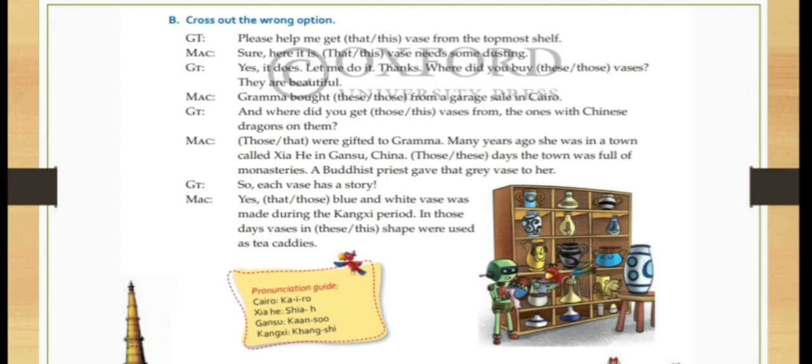GT. Yes, it does. Let me do it. Thanks. Where did you buy dashwares? So again here what will come? This. Because it is near and bags are there. So these. They are beautiful. Grandma brought dash from the garage sale in Cairo. So here again this will come because the nearby bags they are talking about. And where did you get those vases. So again see here this and those. Two things are there. So we will use those bags from. Means that bags which are far. The ones with Chinese dragon on them. So that bags are far. So again here what they have used? Those.